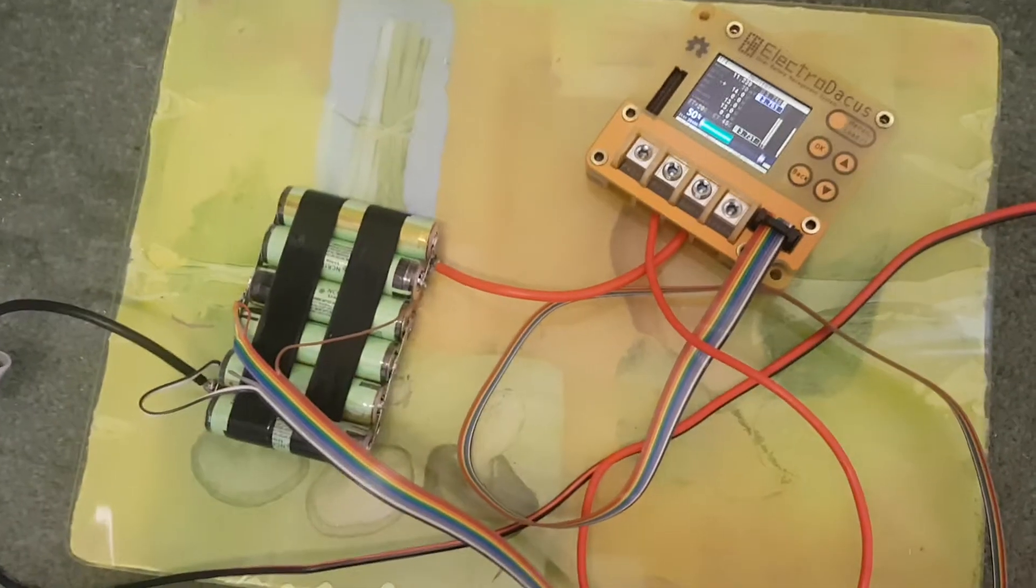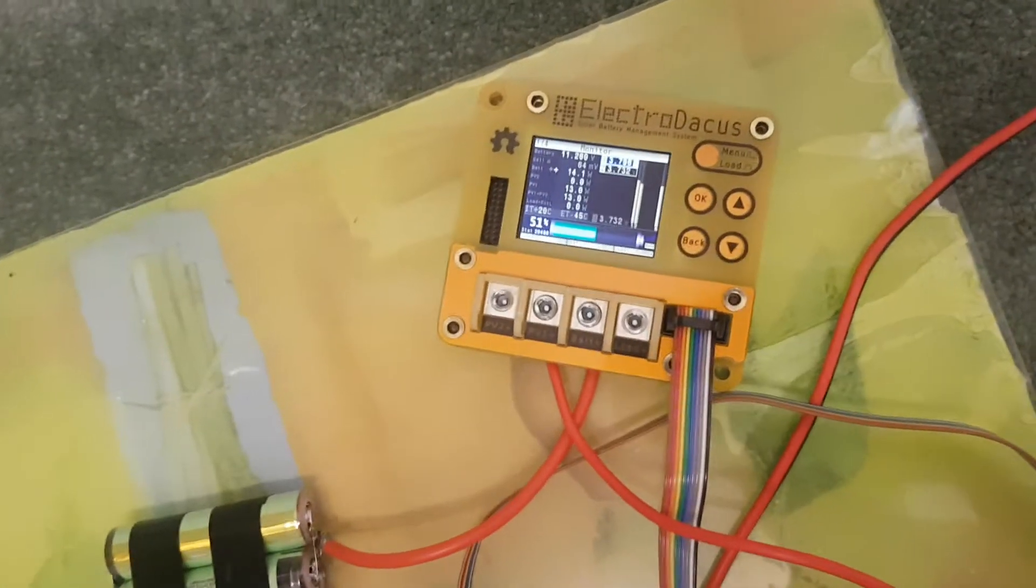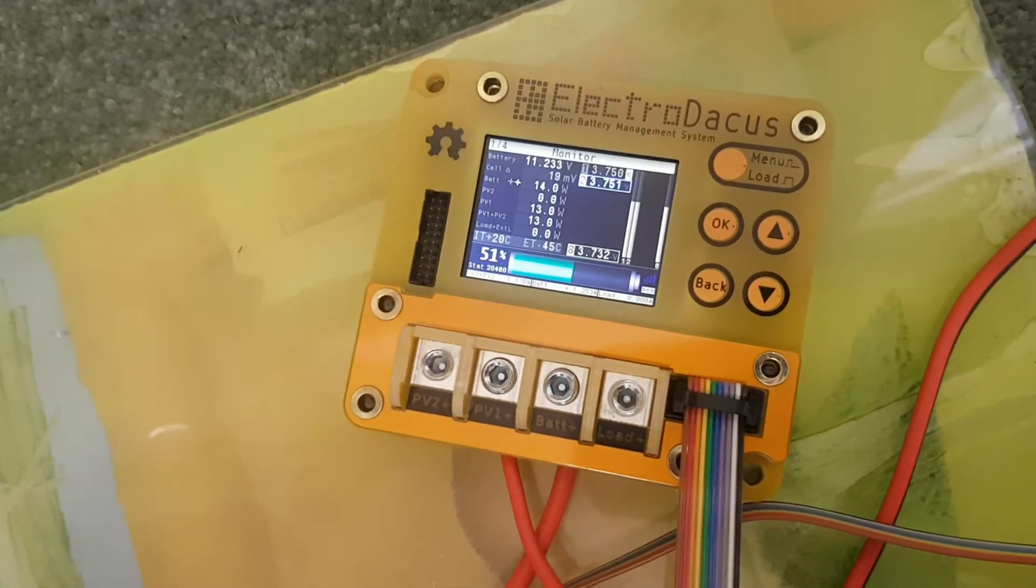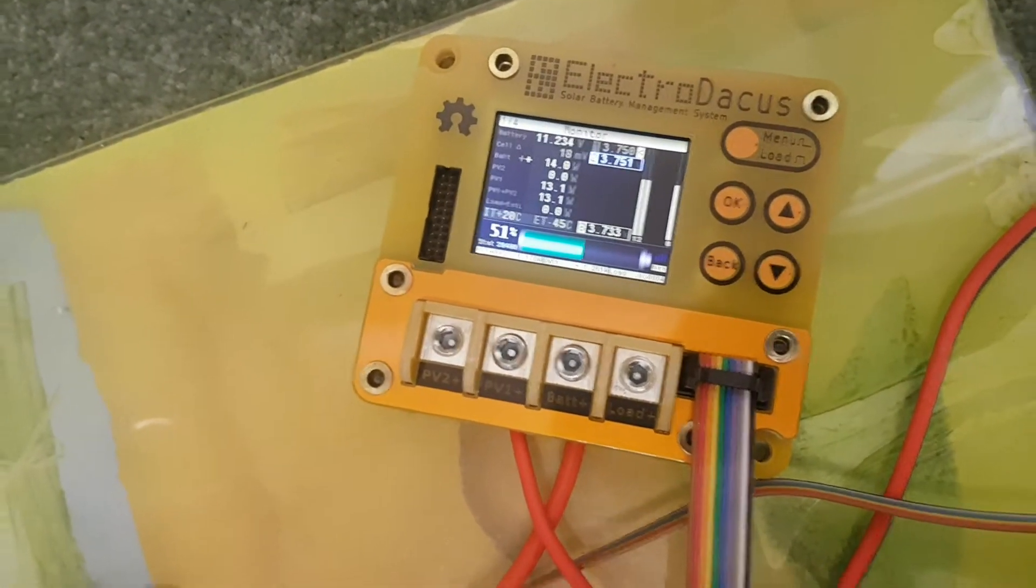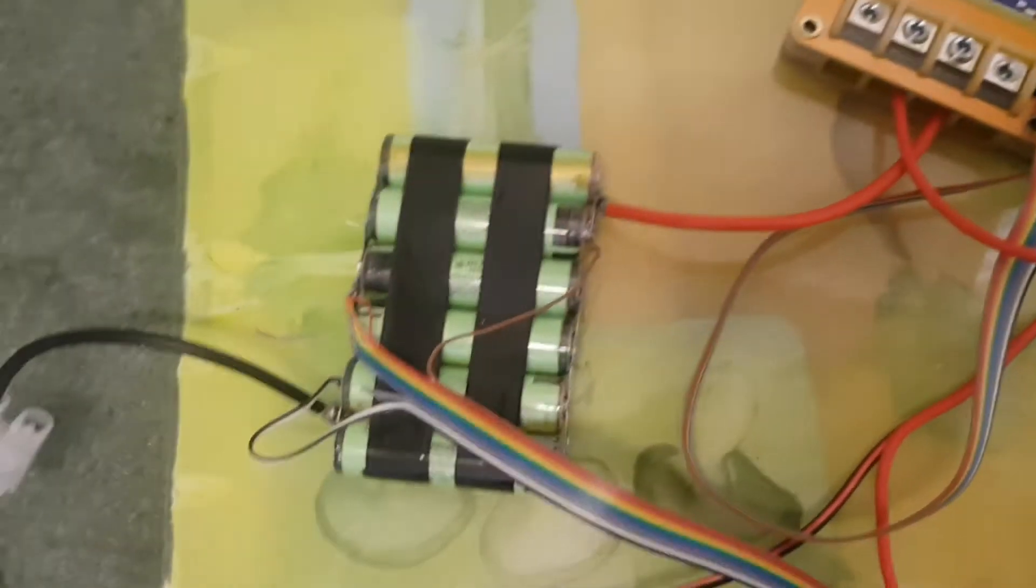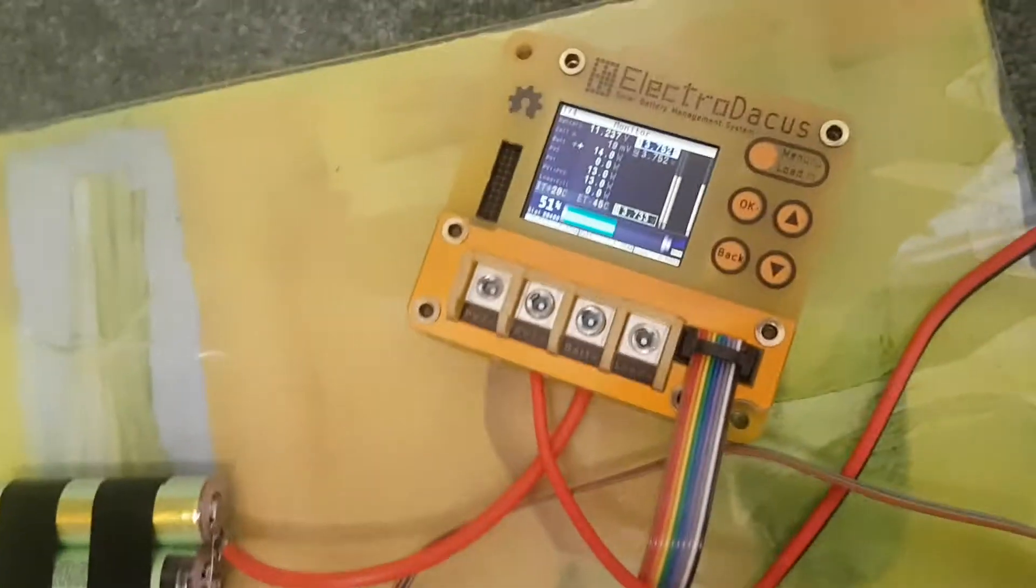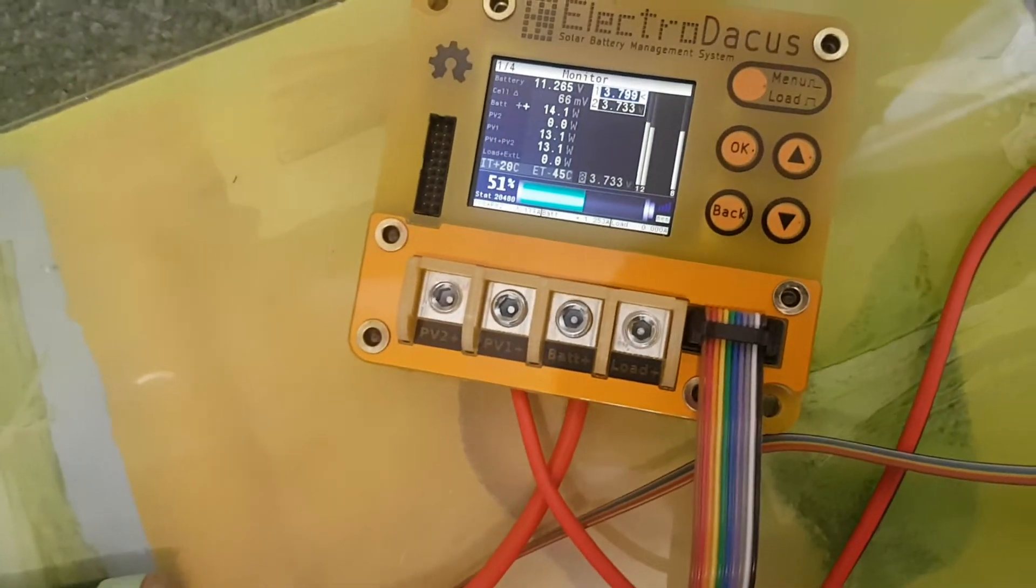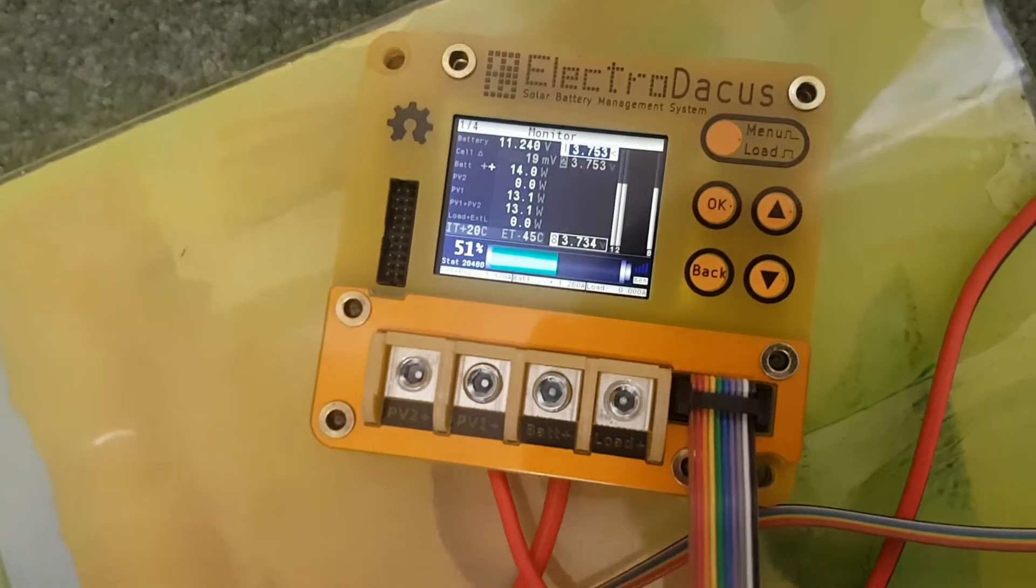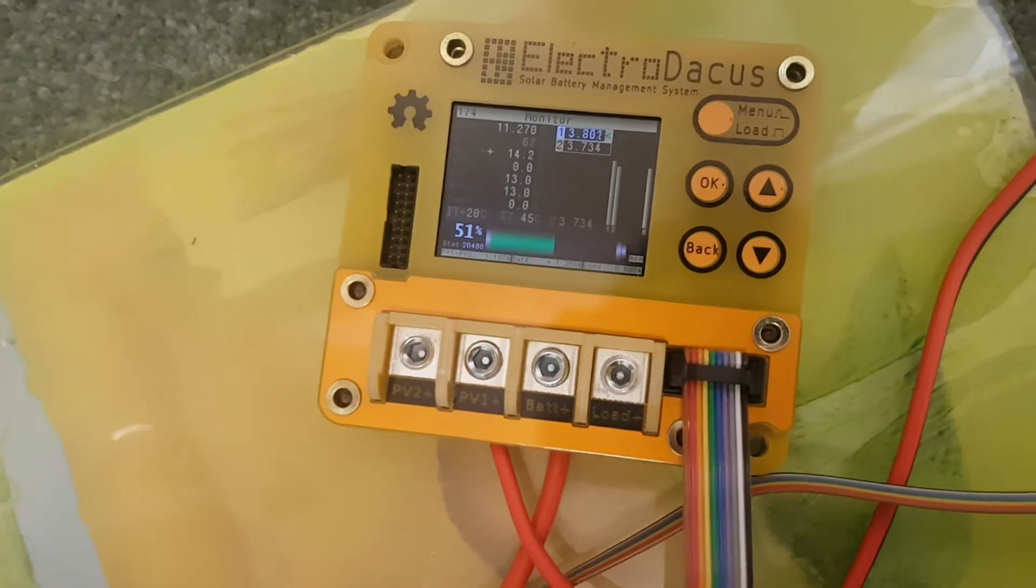This is going to be sort of a test setup, but this is going to be the heart of the electrical system. This is the SBMS100 by Electrodacus. I'm just running a test setup now with some 18650 cells, just to see how it performs. So far, I'm very happy with it. It only just came in the post today because I gave him my address a bit late. That's not his fault.